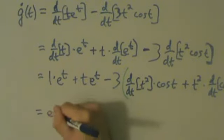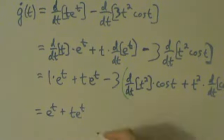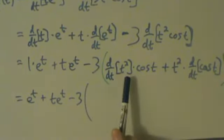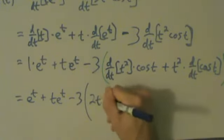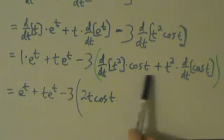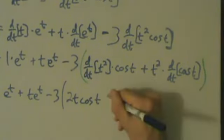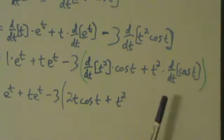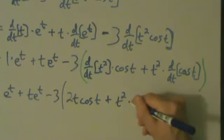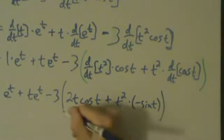So this is just e to the t plus t·e to the t. And then what do we have in here? Minus 3 times: d/dt of t squared is 2t, then multiplying by cosine of t. Then t squared is just t squared, times the derivative of cosine of t. The derivative of cosine was negative sine, so we have minus sine of t, and then the outer parentheses close.